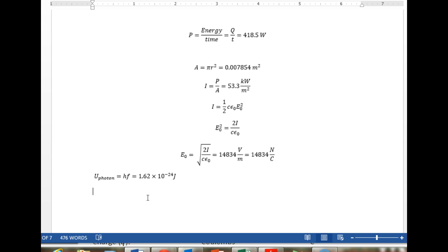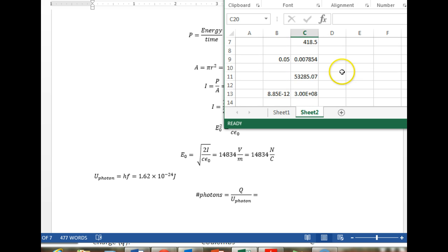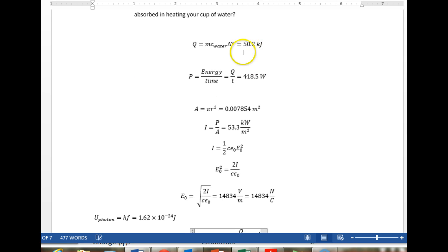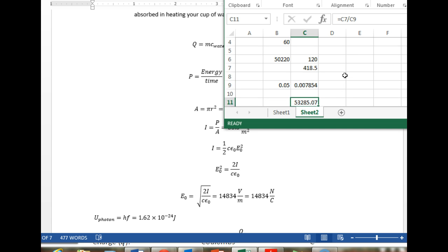And now the number of photons equals the total energy that we put into it. So that's going to be our 50.2 kilojoules, divided by the energy per photon. So 50.2 kilojoules divided by the energy per photon, and we get 3 times 10 to the 28th photons.